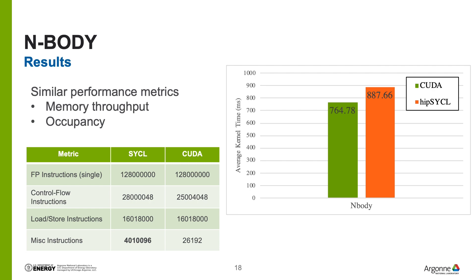We went through NV metrics and assembly code to understand why this performance difference existed. We found very similar performance metrics almost across the board for memory throughput, occupancy, and floating-point utilization for both CUDA and HIP-SYCL executions. One of the main differences we located is that the SYCL version was simply executing more instructions, many of these being miscellaneous instructions as shown in the graph below. This leads us to believe that the performance difference is simply because the SYCL version was doing more work to get the same solution.